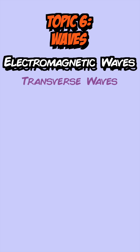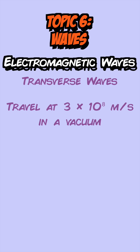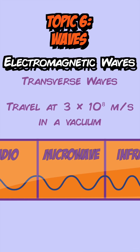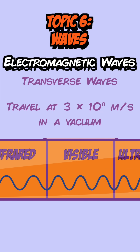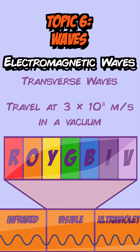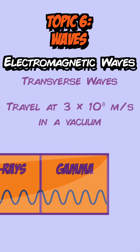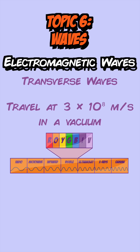Electromagnetic waves are transverse waves that all travel at the same speed in a vacuum — 3×10⁸ m/s. There are seven types forming a continuous spectrum: radio waves, microwaves, infrared waves, visible light (red, orange, yellow, green, blue, indigo, violet), ultraviolet waves, x-rays and gamma rays. As you go from radio to gamma, wavelength decreases and frequency increases.